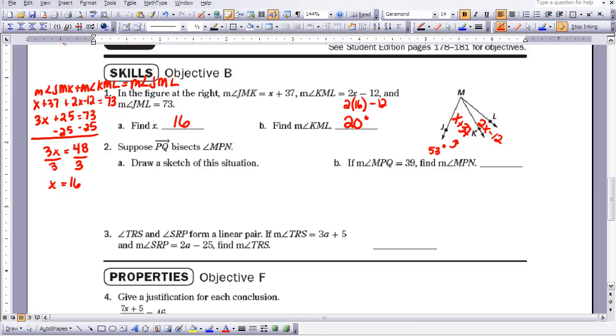Let's go to set number 2. Suppose PQ bisects angle MPN. So let's just draw an angle. It doesn't matter how big you make the angle. I'm just drawing a diagram. So MPN. And PQ is bisecting it, so we know it's going through the center. So I'm going to call this Q. And this measure equals this measure. If MPQ is 39, then we know that QPN is 39 also. So MPN is going to be 39 plus 39. So that would give me 78 degrees for angle MPN.